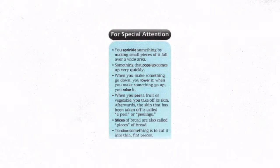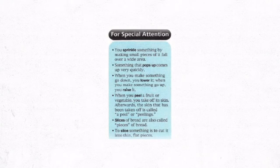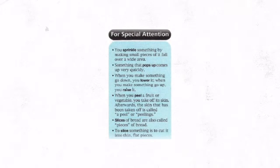Here are a few things for your special attention. You sprinkle something by making small pieces of it fall over a wide area. Something that pops up comes up very quickly — think of a pop-up message on your computer screen. When you make something go down, you lower it. When you make something come up, you raise it. Think: you lower your hand and raise your hand. When you peel a fruit or vegetable, you take off its skin. Afterwards, the skin that has been taken off is called a peel, or peelings. Slices of bread are also called pieces of bread, and to slice something means to cut it into thin, flat pieces.